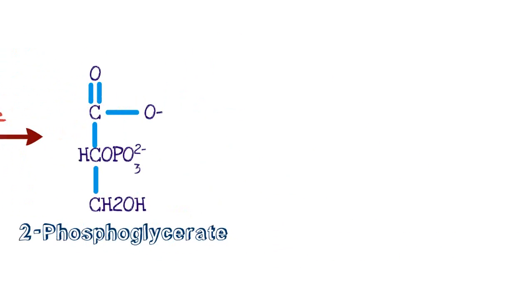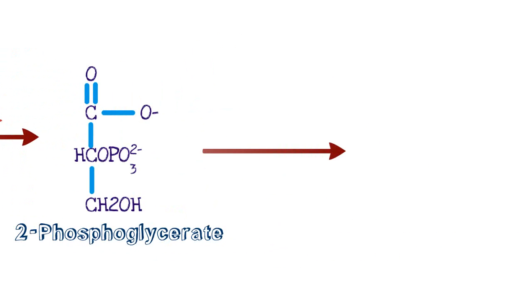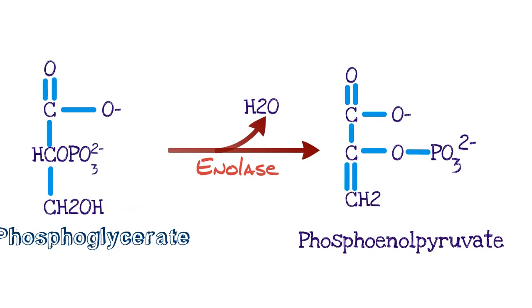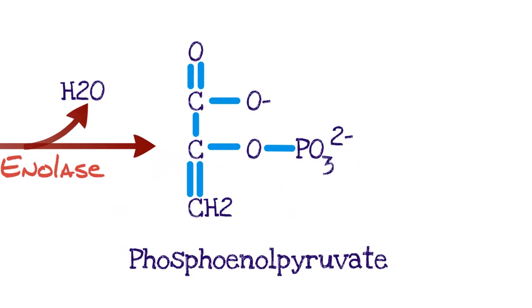The next step converts 2-phosphoglycerate using enolase to phosphoenolpyruvate. In doing so, we release water. This is the first step where water is released, and you can see the oxygen and hydrogen come from the 2nd and 3rd carbons. Now we have phosphoenolpyruvate.